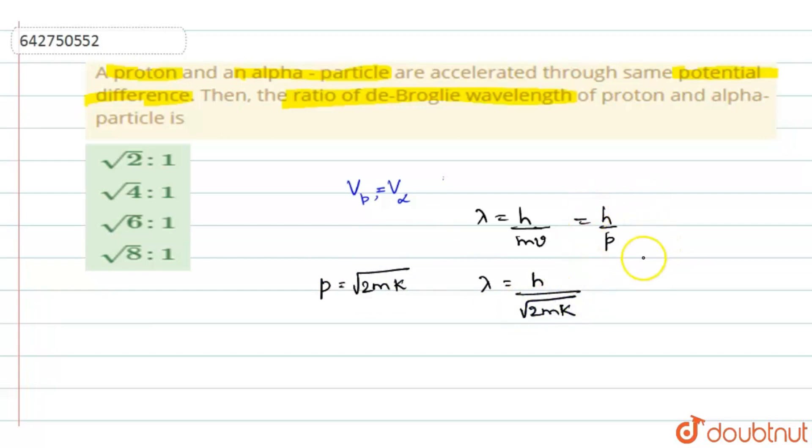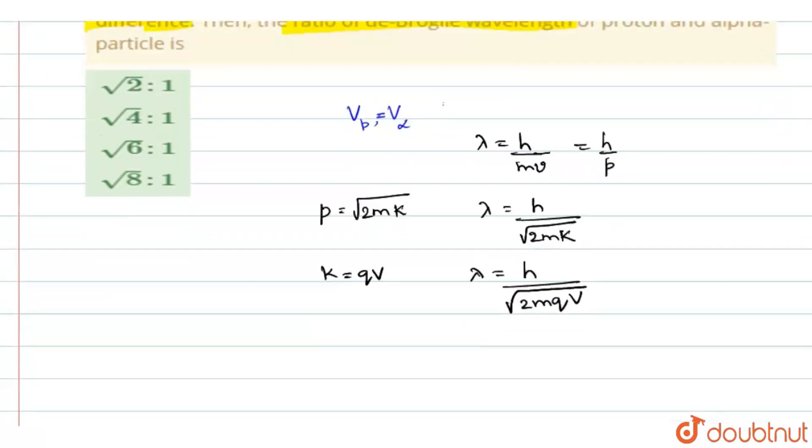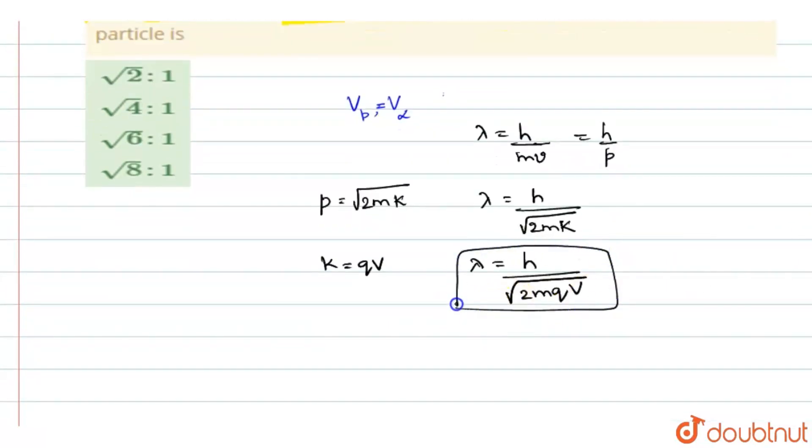Now if k is the kinetic energy, the kinetic energy can be written as q into the potential difference V. So lambda will be equal to h by root of 2mqV. This is the expression for de Broglie wavelength in terms of potential difference.